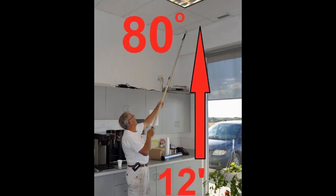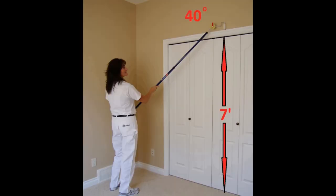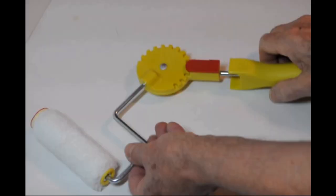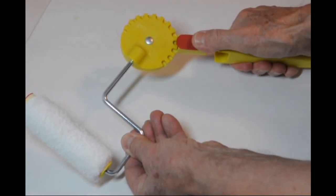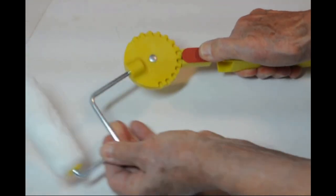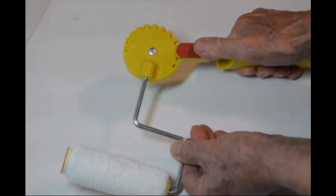You can save yourself dangerous ladder work by using our eleven position adjustable handle mounted on an extension pole. You can easily find the perfect angle that will work in the majority of high areas. Install it on an extension pole, and you are ready to go.